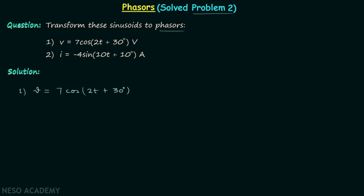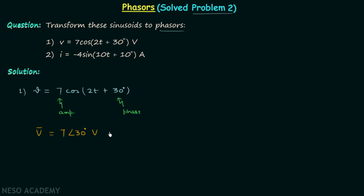In phasor representation we include two pieces of information about a sinusoidal function. The first is the amplitude, which is 7 in this case, and the second is the phase, which is 30 degrees in this case. Therefore the phasor representation will be 7∠30° in volts. This phasor representation corresponds to the peak value of voltage V.